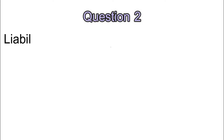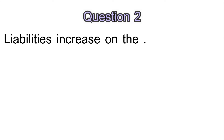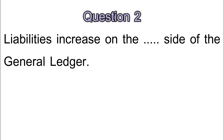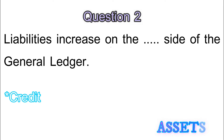Question 2: liabilities increase on which side of the general ledger? The answer is the credit side. This is because liabilities are going up, so you credit them. Assets would do the opposite — they increase on the debit side.